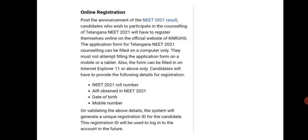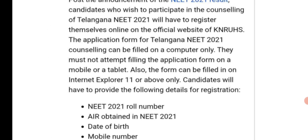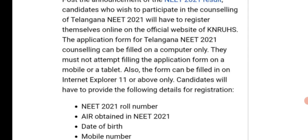The first step is online registration. Students have to go to the official website of KNRUHS and fill the application form. There are some conditions while filling the application form: the form can be filled on a computer only. Students must not attempt to fill the application form on a mobile or tablet. Also, the form can be filled in Internet Explorer 11 or above.